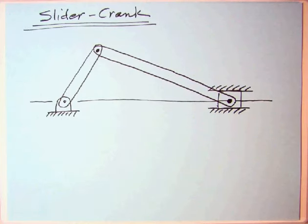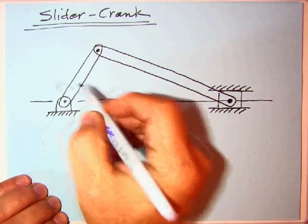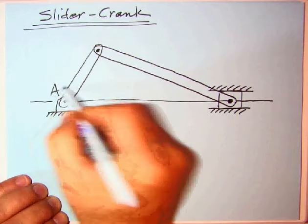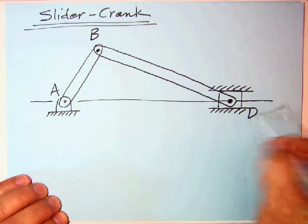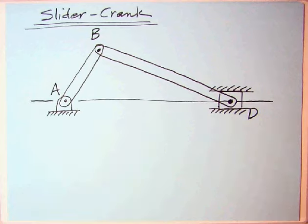Shown here is the typical slider crank assembly, and using the notation in the MERM, this point here is labeled A, B, and over here is D. Point C is used in the MERM as the center of instantaneous velocity or rotation, and that's not a method we're going to look at here.